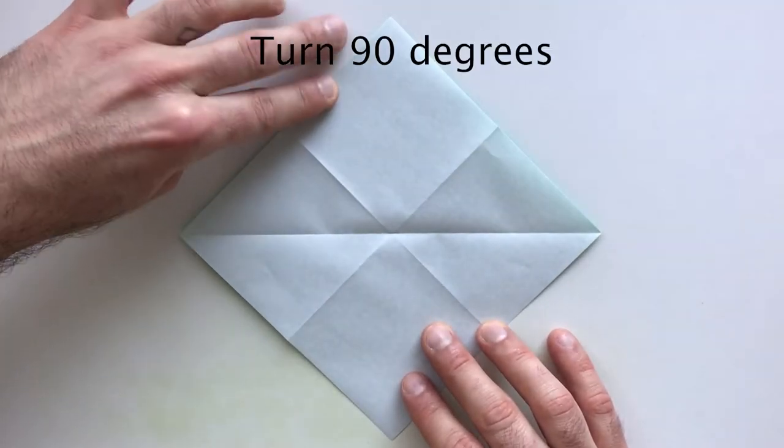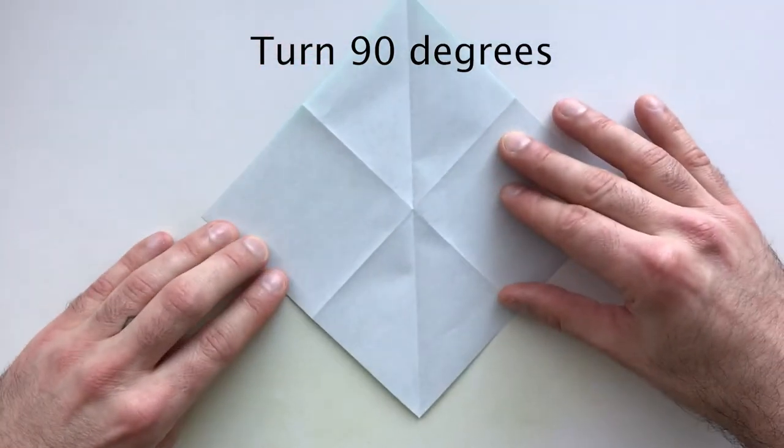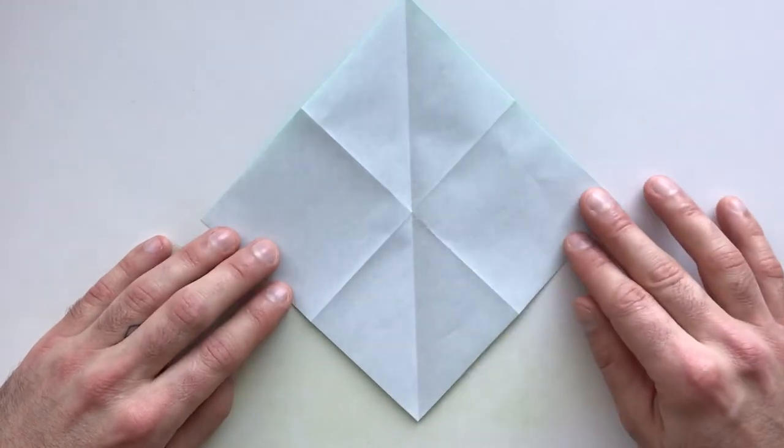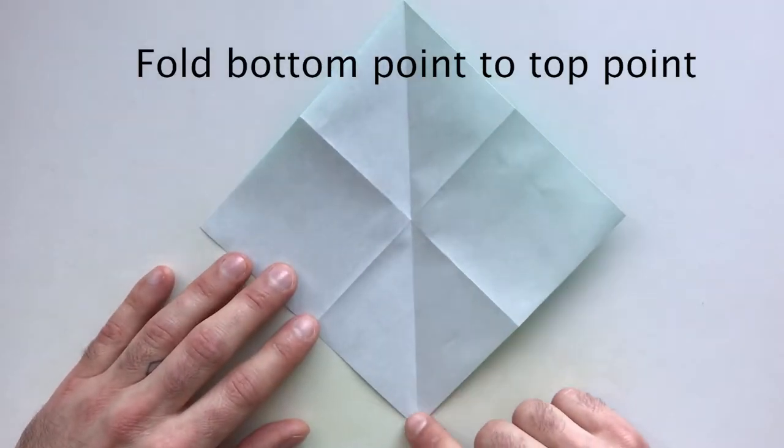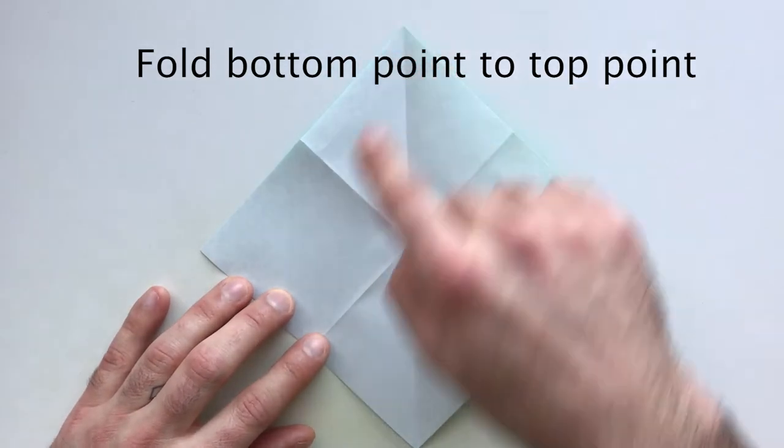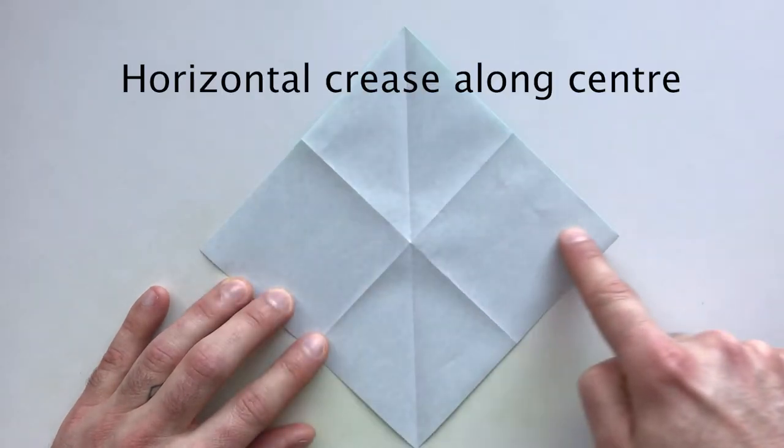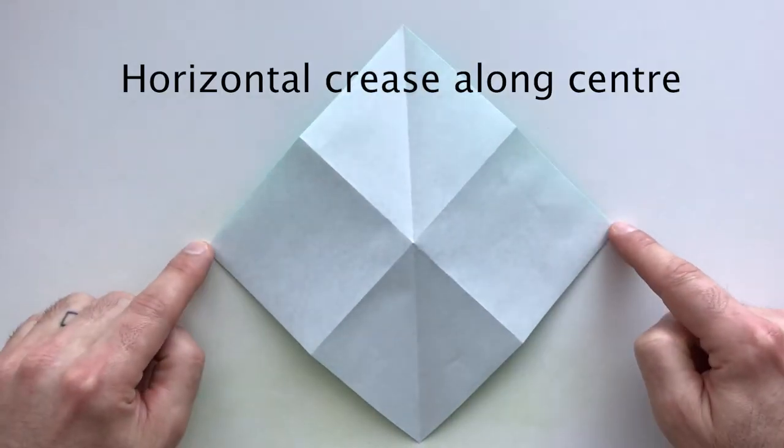Then turn 90 degrees and again fold the bottom point up to the top point to crease along the horizontal connecting these two points.